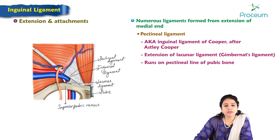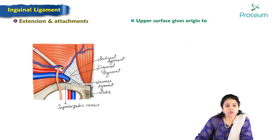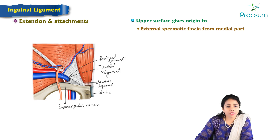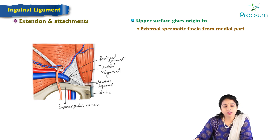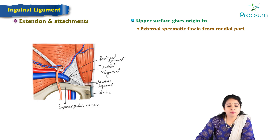The inguinal ligament is a modification of the external oblique aponeurosis. The upper surface of the inguinal ligament gives origin to the external spermatic fascia, which continues into the scrotum — not within the inguinal canal itself, but extending around the spermatic cord (vas deferens) into the scrotum.